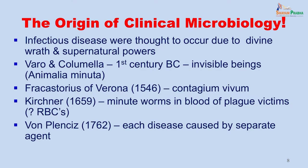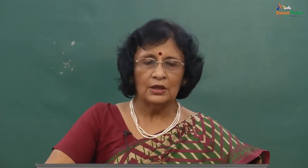The origin of microbiology started very late, almost towards the 19th century. Initially, infectious diseases were thought to occur due to divine wrath and supernatural powers — the anger of the gods. Varro and Columella in the first century BC were the first to hypothesize that there may be invisible beings causing infections. In 1546, Pracastorius from Verona proposed that some contagion vivum spreads from person to person. In 1659, Kirchner saw something in the blood of plague patients and thought he saw the causative microbe, but without an adequate microscope his final organism — probably not Yersinia pestis — could not be confirmed.